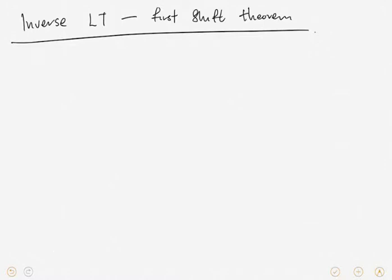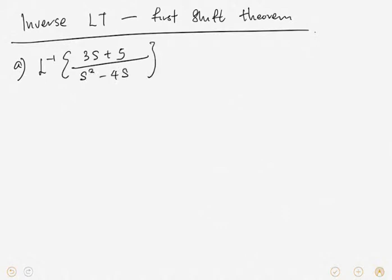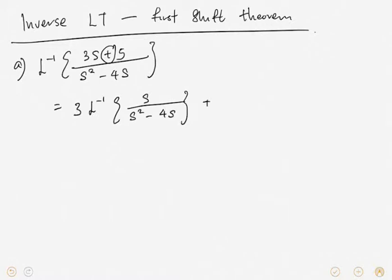Hello everyone, today I would like to show you how to use the first shift theorem to solve the inverse Laplace transform. Let me show you some examples. If inverse Laplace transform of (3s + 5) divided by (s² - 4s), here we can separate into two since we have the plus here. We firstly take out the constant 3, and we are left with s over (s² - 4s), plus 5 where 5 is also a constant.